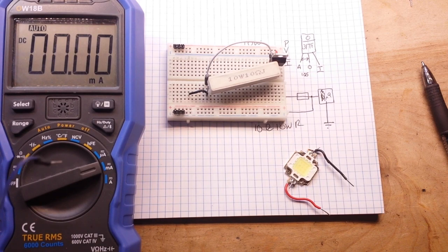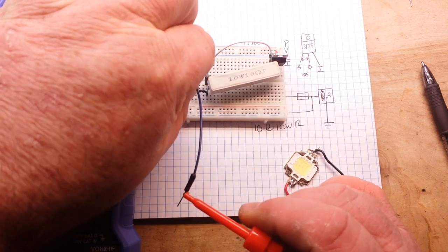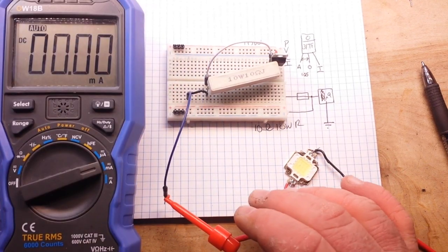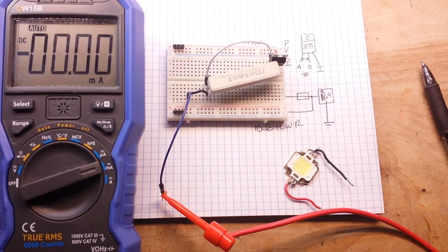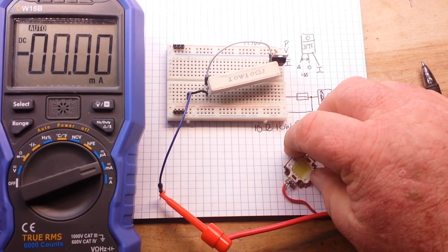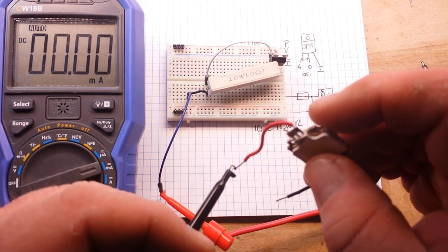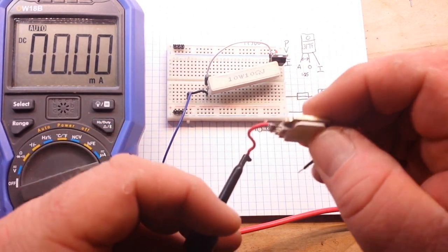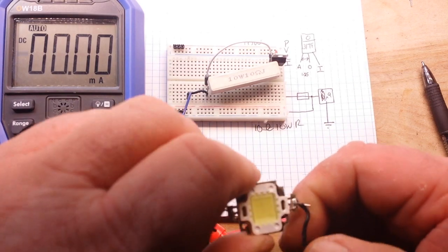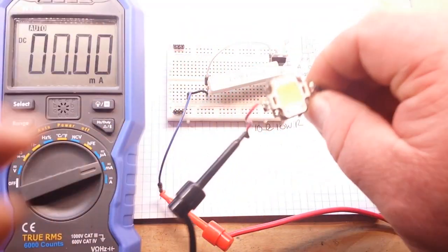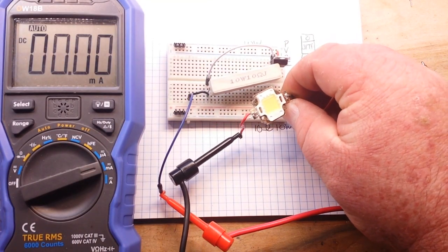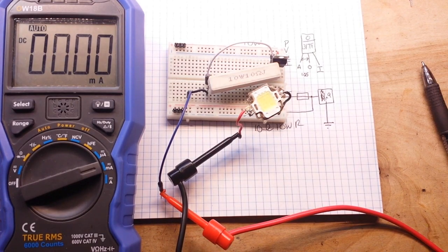Pardon that. So I'm going to take positive lead of the ammeter, put it into our output there, negative lead, the ammeter goes to the positive lead of our LED, which I will then plug into ground. That will complete our circuit.